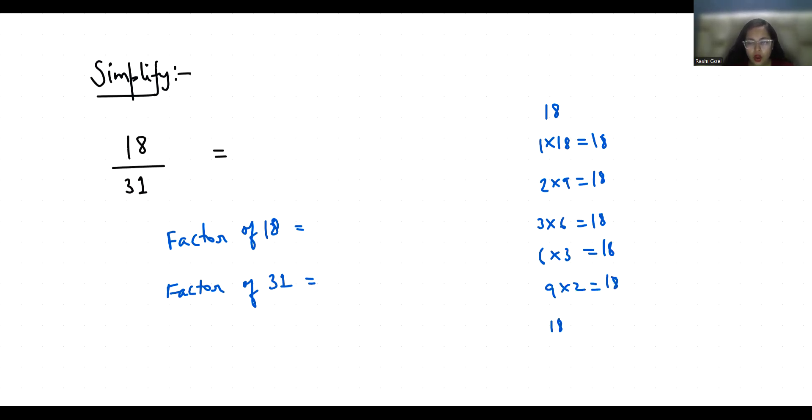So what are the factors? 1, 2, 3, 6, 9, and 18. Now comes to 31. 31 is a prime number, and any prime number has only two factors: 1 and the number itself.